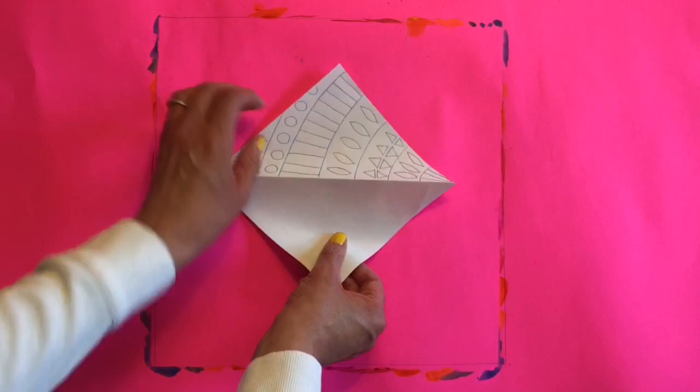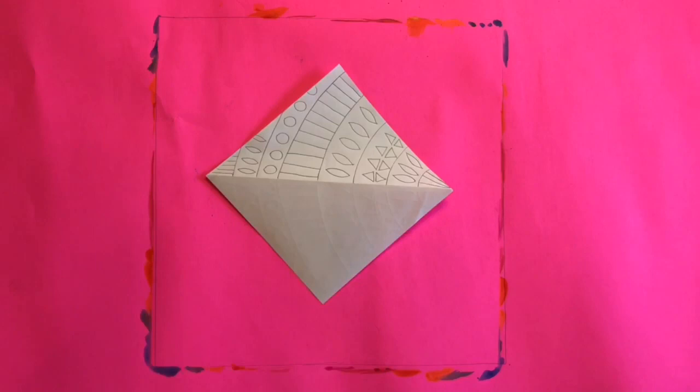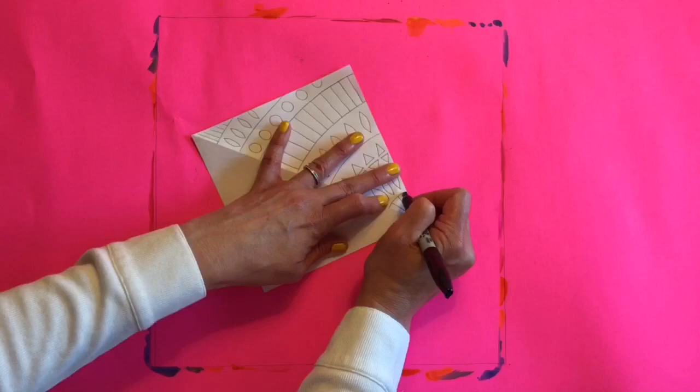Then open it up and while it's open, trace over all your lines with a black sharpie. If you're using tracing paper, however, you can skip this step of using the sharpie.